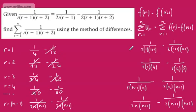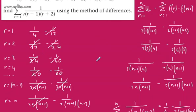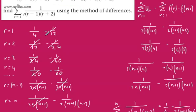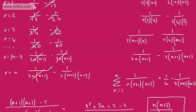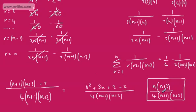In your workings you should build up a table and strike off the cancelling terms. This whole series collapses in the middle — the first and last terms survive. In this case, all we need to do is add 1/4 and negative 1 over 2(n+1)(n+2), tidy it up, and write our final answer.